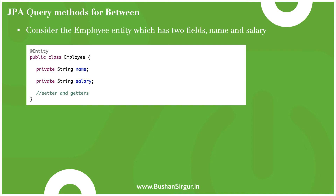Hi, welcome back to the Spring Boot JPA tutorial. In this video we are going to discuss the query method for the 'between' keyword. We have already discussed how to create query methods and the naming conventions to follow. If you missed that video, I'll drop a link in the description. Let's move on and discuss the 'between' keyword for creating query methods.